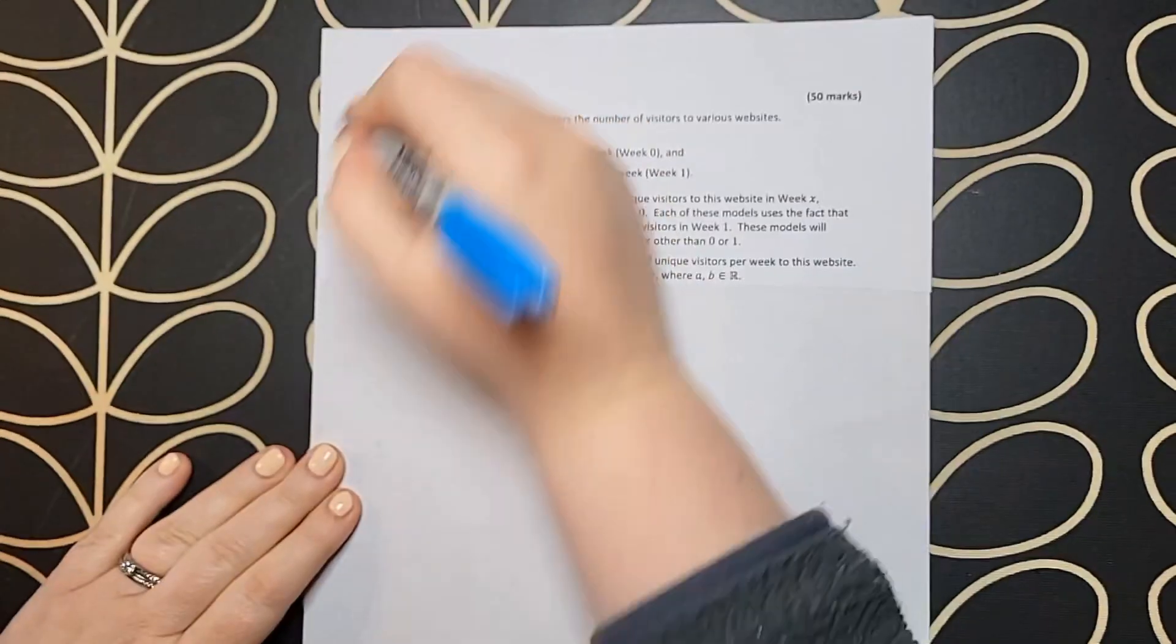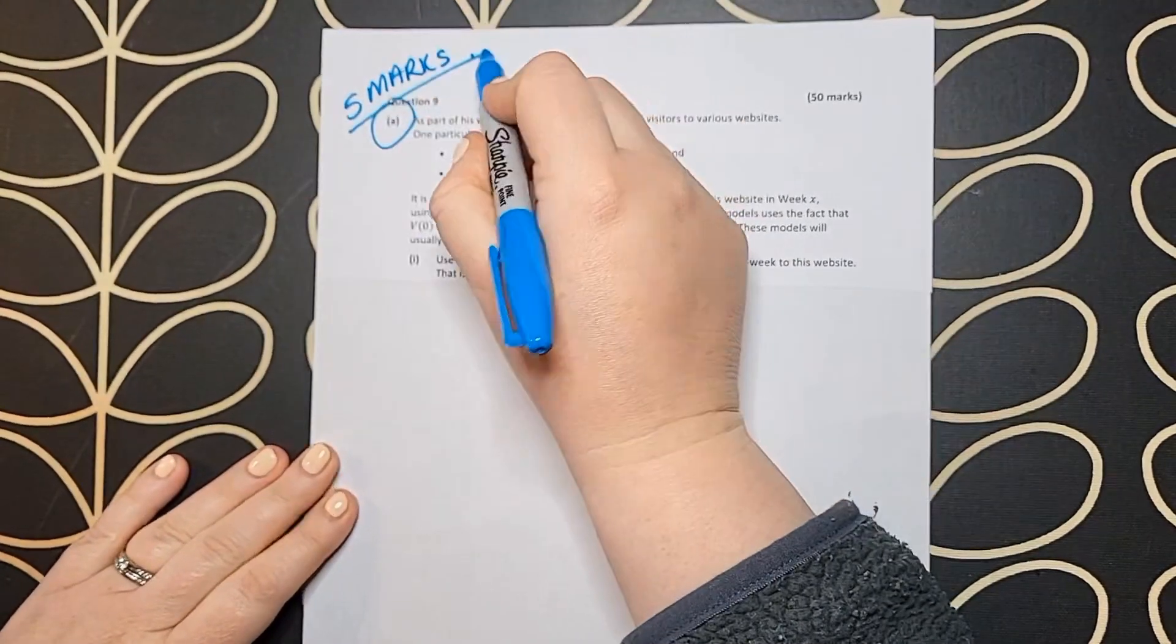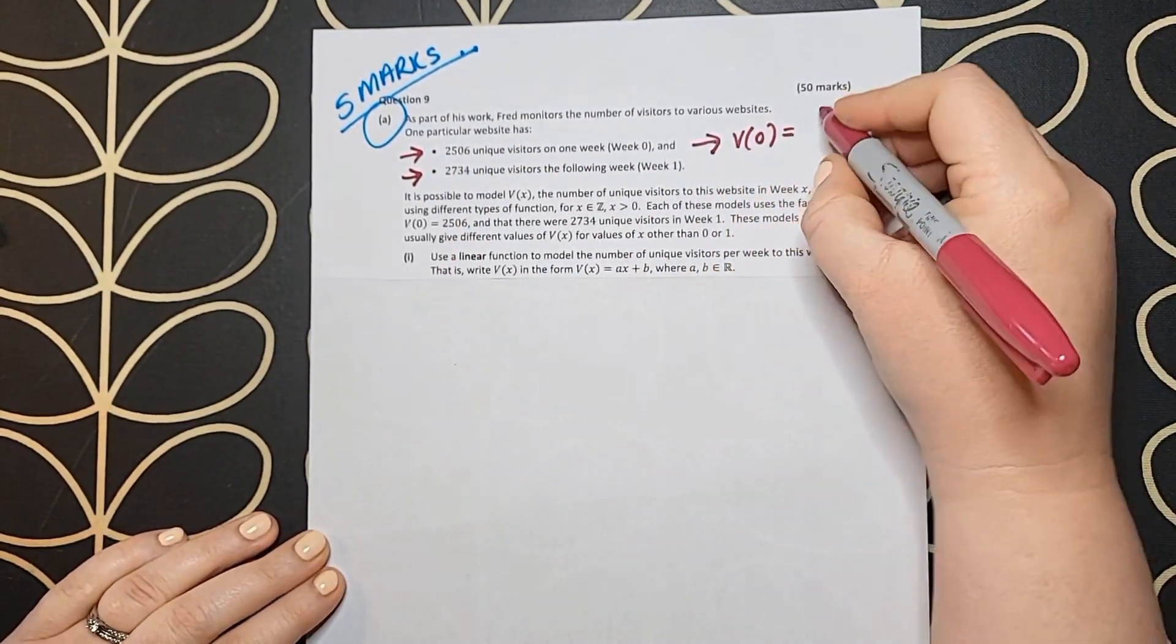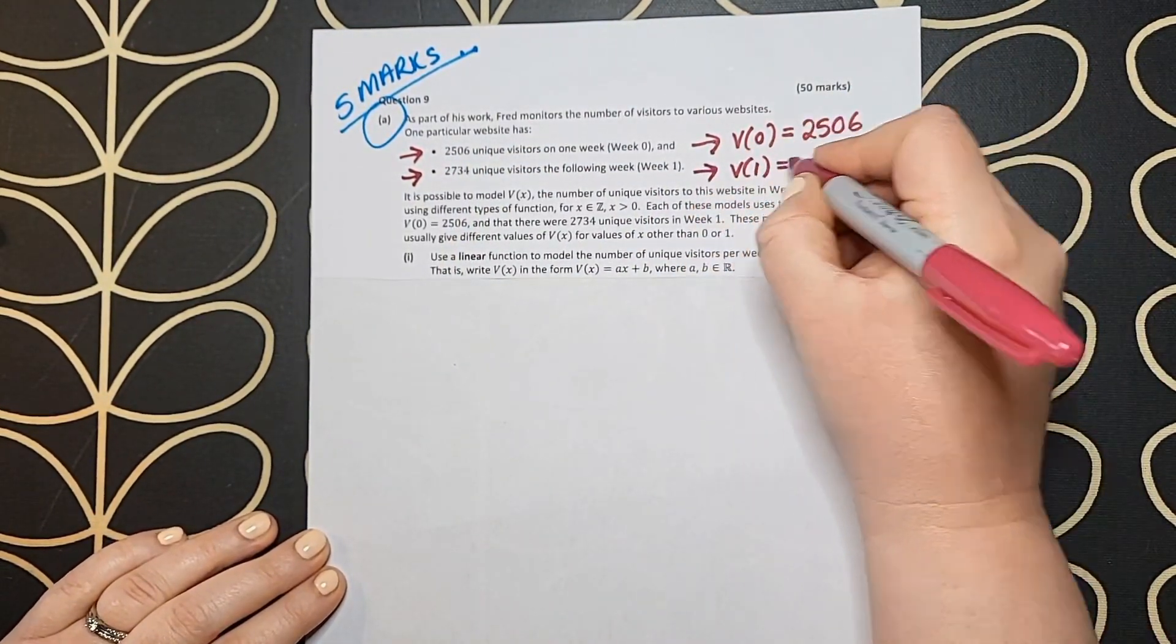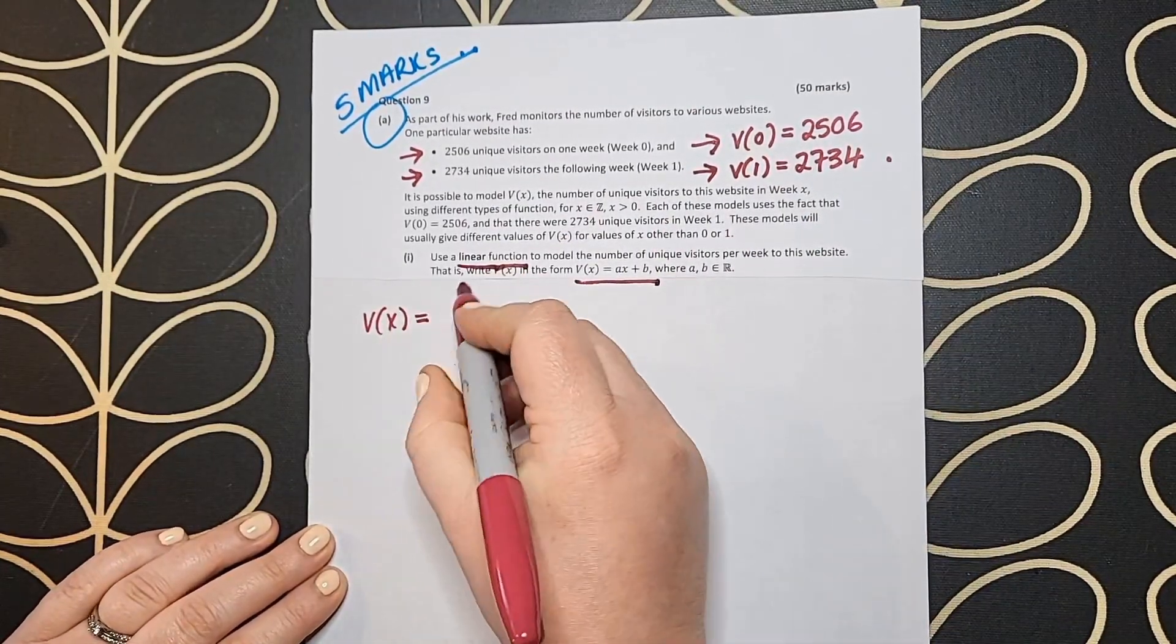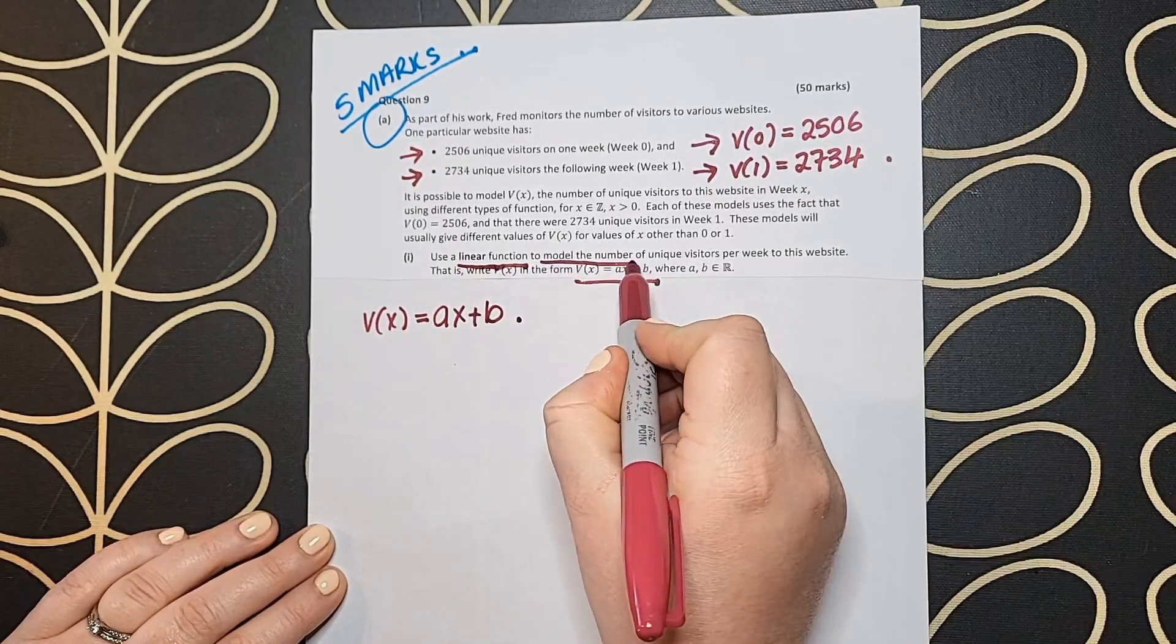This is the 2022 leave and start higher level paper 1 deferred paper. In part a, we are given some information labeled as v(0) and v(1). They're asking us to create a linear function and give us the linear function v(x) = ax + b.